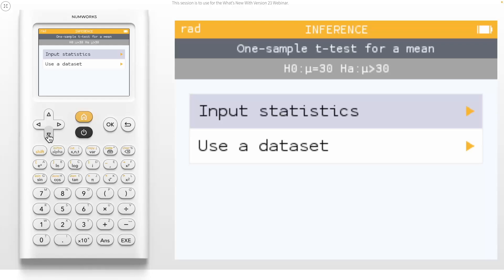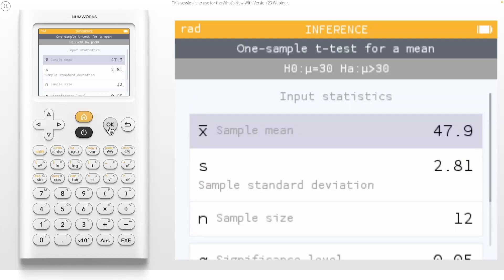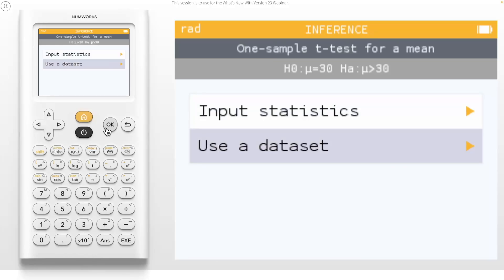Clicking on Input the Statistics will reveal a familiar screen where you can input the statistics for your data set, just like you could before version 23. Let's back out and select the new feature, which is Use a Data Set.